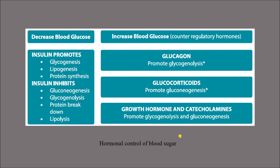Regarding hormonal control of blood sugar: insulin promotes glycogenesis, lipogenesis, and protein synthesis. When glycogenesis occurs, glucose is converted into glycogen, so blood glucose level decreases. Insulin also inhibits gluconeogenesis and glycogenolysis — it inhibits the production of glucose and the breakdown of glycogen into glucose — so overall there is a decreased blood glucose level.